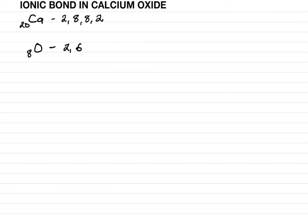Calcium can achieve inert gas configuration by donating two electrons, whereas oxygen can achieve inert gas configuration — that means eight electrons in the last shell — by receiving two electrons. So let's see how the ionic bond takes place in calcium oxide.